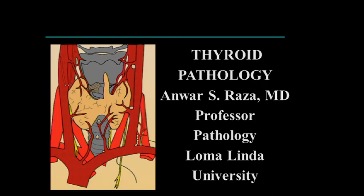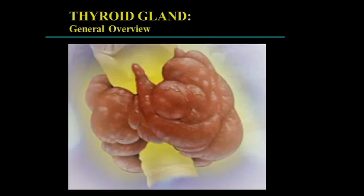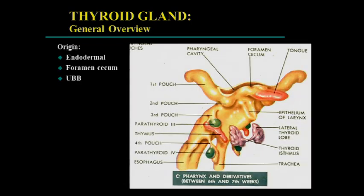The first lecture is on thyroid pathology. The thyroid gland has right and left lobes and the isthmus. Sometimes, particularly when enlarged, you may have a pyramidal lobe. It's not uncommon to see nodules in the thyroid gland, and particularly if patients are undergoing ultrasound examination, they may pick up more subclinical nodules in those instances.